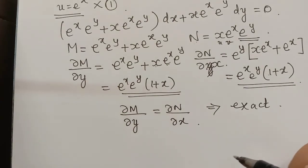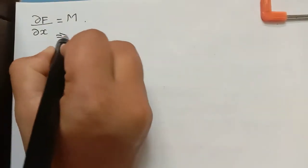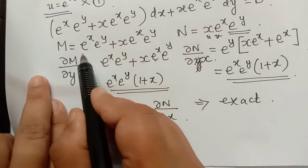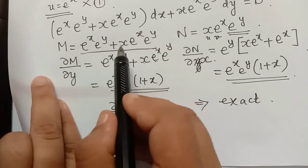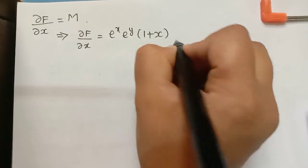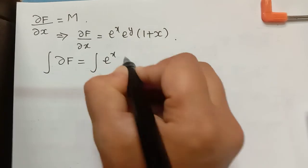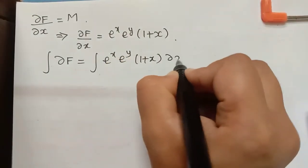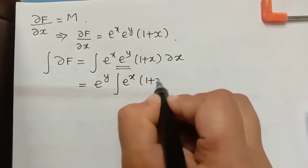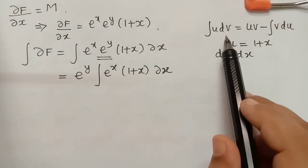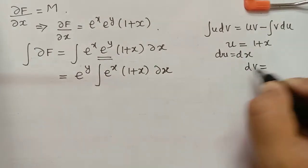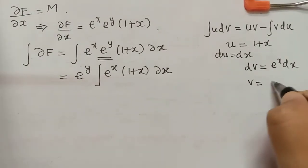Because the equation is exact, there exists a function F such that ∂F/∂x = M. So ∂F/∂x = e^x·e^y(1 + x). Integrating: F = e^y ∫e^x(1 + x)dx. Since e^y is constant with respect to x, we apply the integration by parts (uv) method with u = (1 + x), dv = e^x dx, so du = dx and v = e^x.